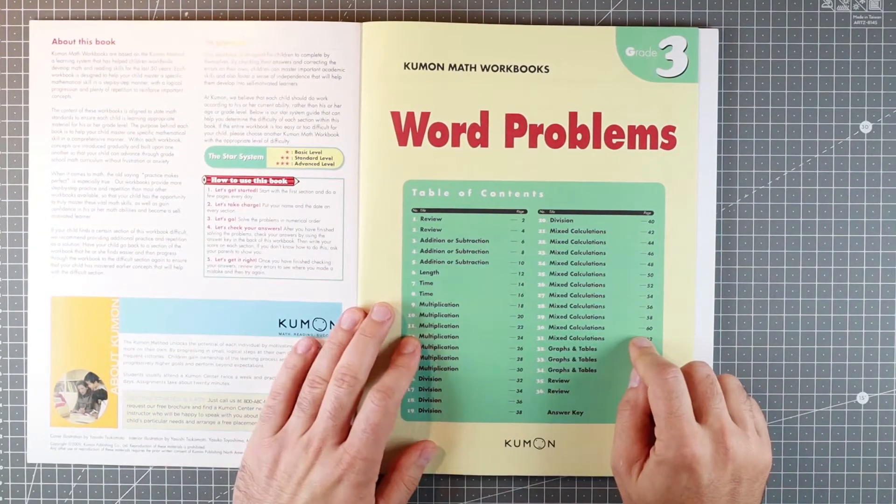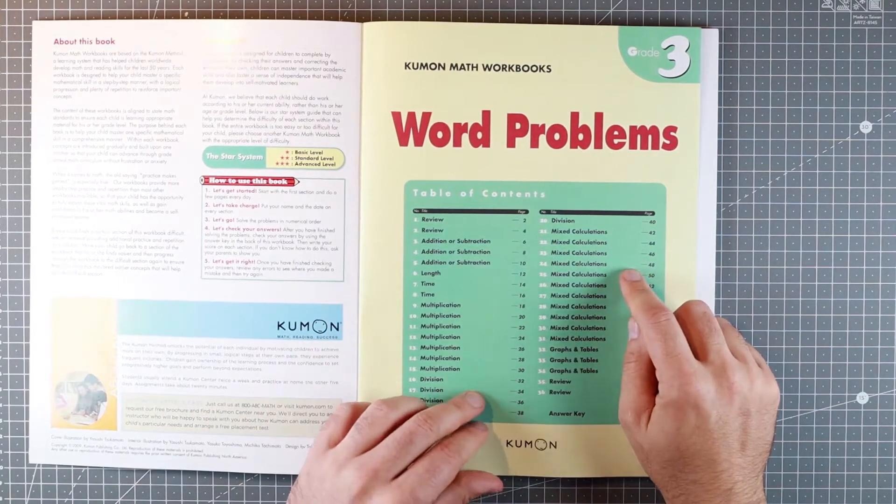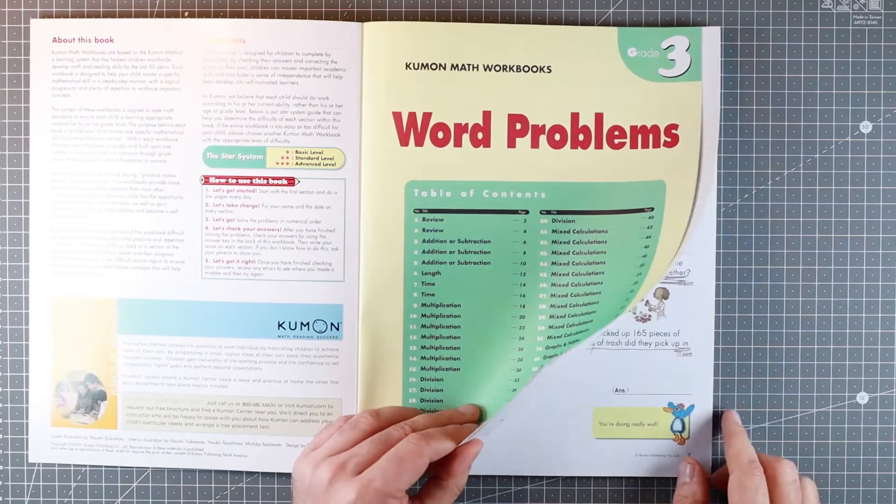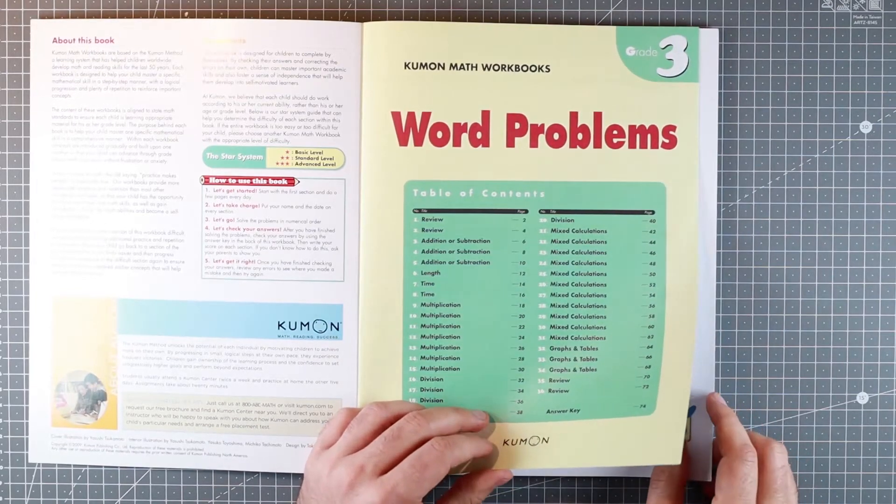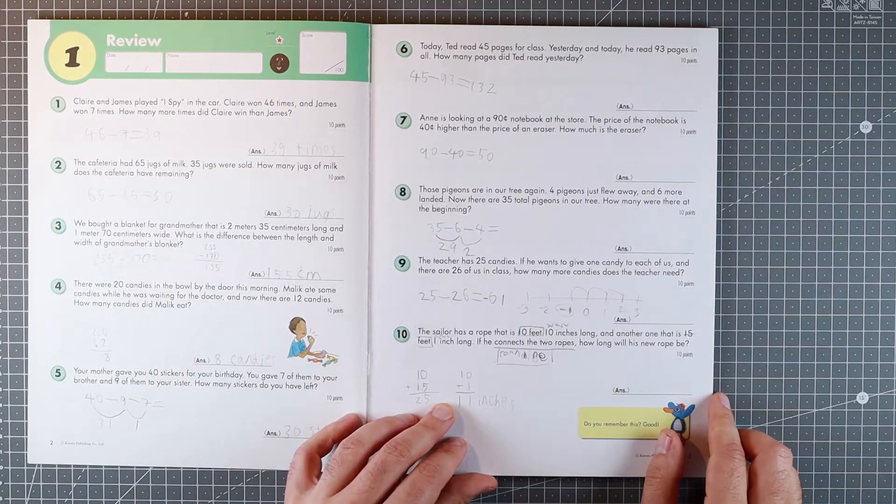Content right here. Addition, subtraction, multiplication, division and whole bunch of mixed calculation with some graphs and tables at the back. All of the word problems books follow the same structure in that regard.